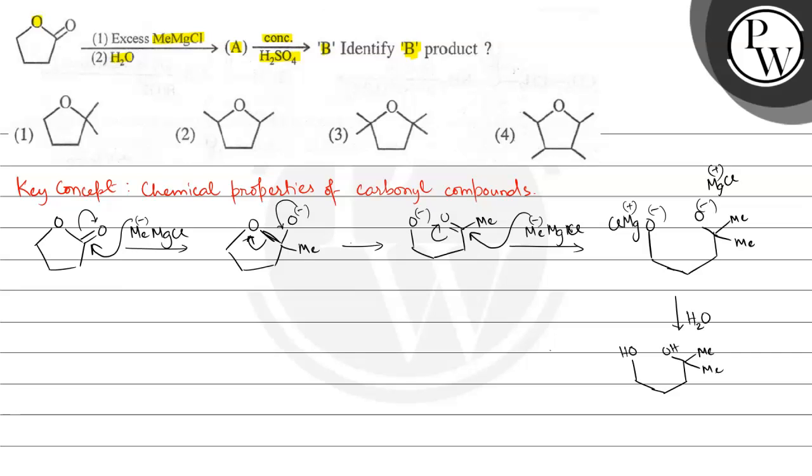Now further we add concentrated H2SO4. H2SO4 provides H plus ions. So the OH here will be protonated by taking up an H plus. We will have this structure with OH and OH2 plus and methyl groups.